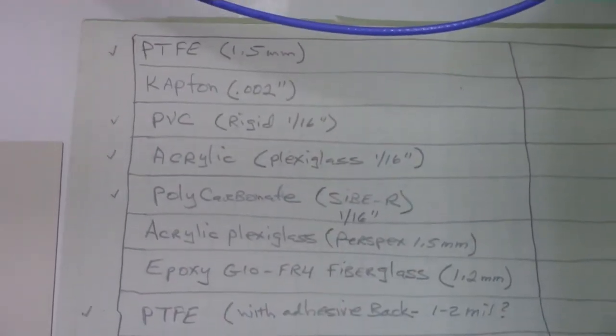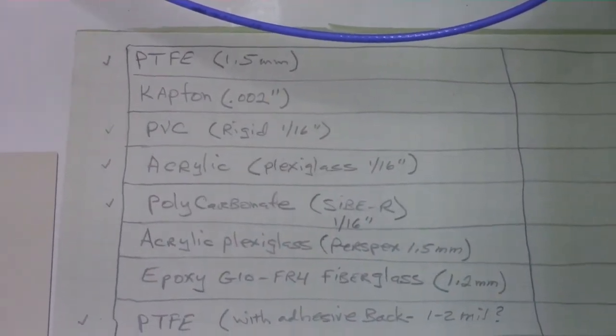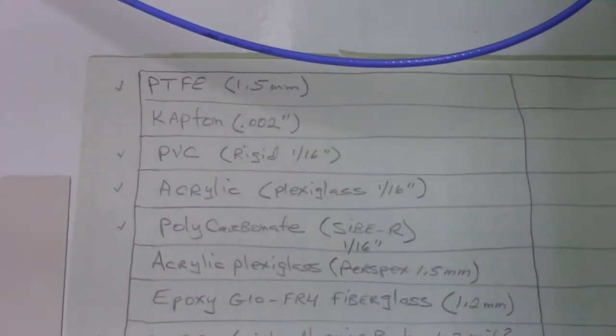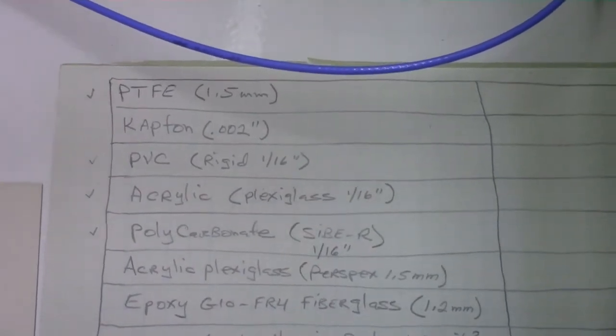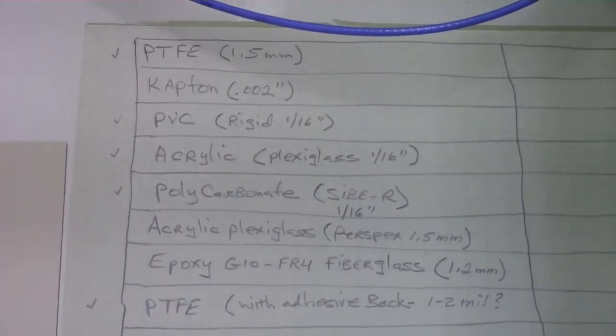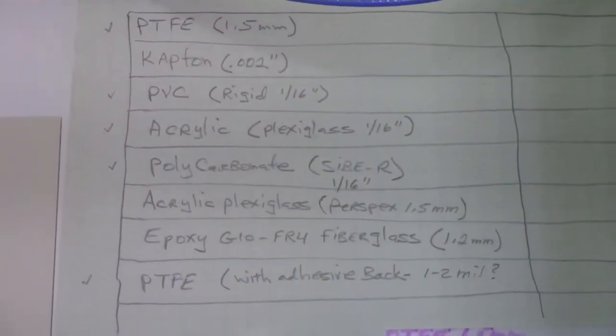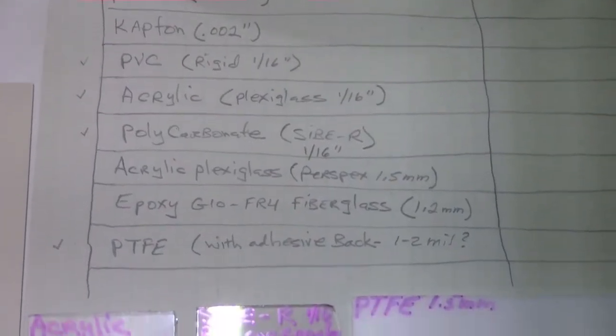These are in no particular order but we have Teflon at the very top, PTFE. I was able to obtain a one and a half millimeter thick sample, that's that white plastic that you see right there. And then we've got some Kapton film that is currently on the way, it'll be a two mil sample, hasn't arrived yet. We've got rigid PVC sample one sixteenth inch thick, and that's the sample right here. And we also have some acrylic, which is commonly known as plexiglass, that's also one sixteenth inch thick.